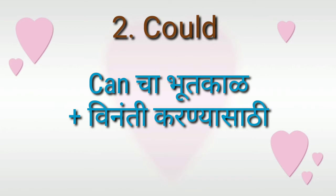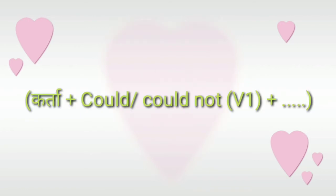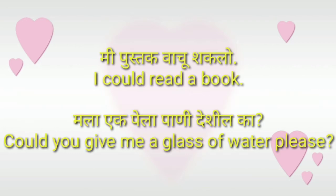Next is 'Could'. The structure for 'could' is: Subject + could or could not + first form of the verb. For example: 'I could read a book' — meaning I was able to read a book (past ability).